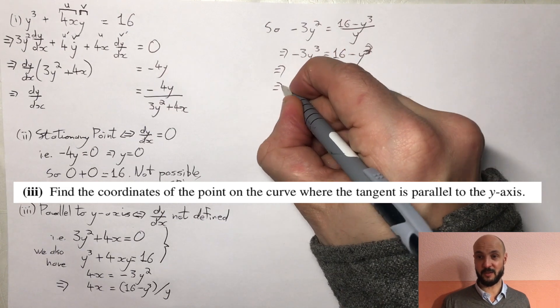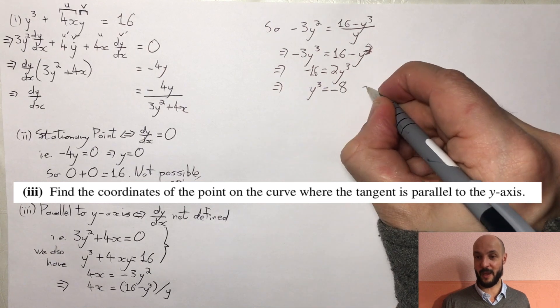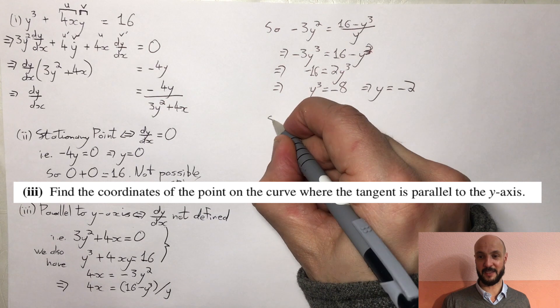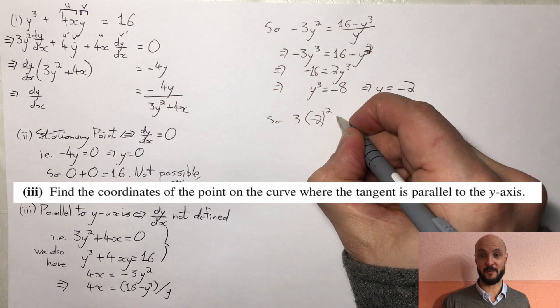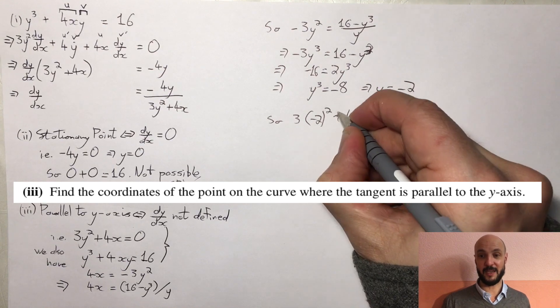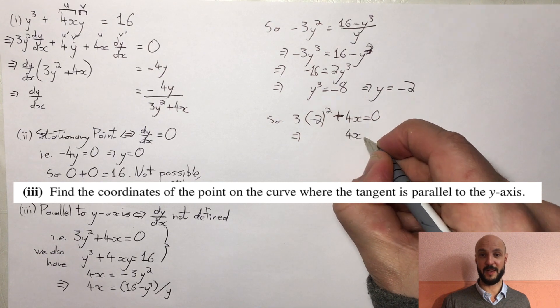We can re-substitute that into our initial equation to give us 3 times minus 2 squared plus 4x equals 0. So 4x equals minus 12, so x is equal to minus 3. So we've got our answer: minus 3, minus 2 are the coordinates, the values of x and y.